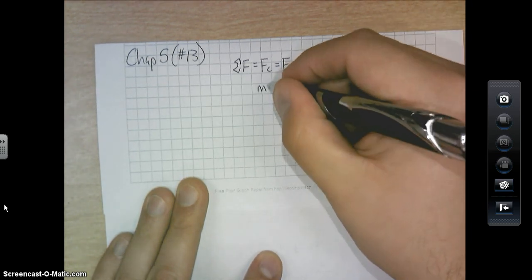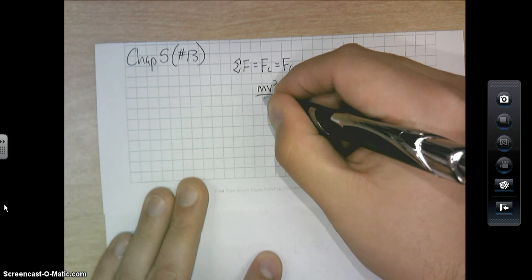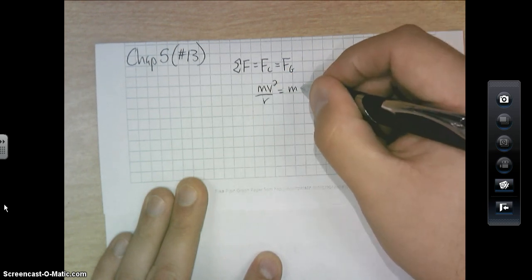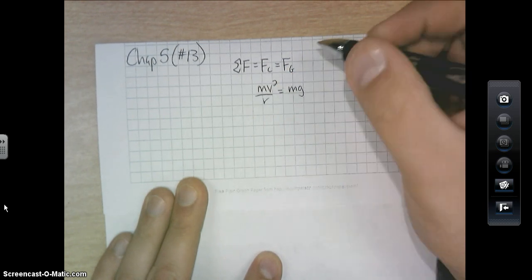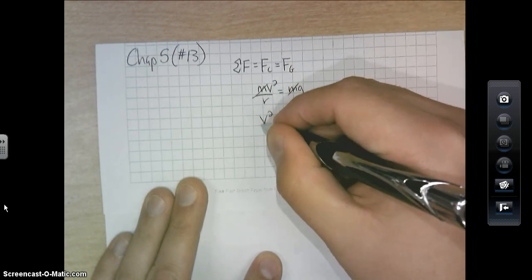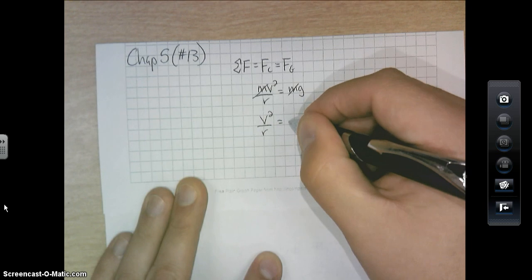Therefore, if I have formulas for F of C, mv squared over r, and F of G, which is m times g, and I've got m's on both sides, then I can cancel that, and I've got v squared over r equals g.